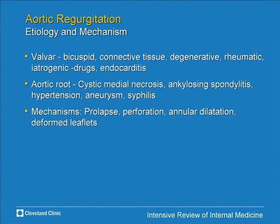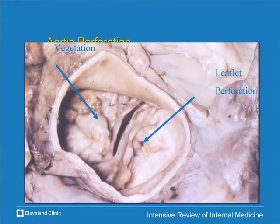In terms of etiology, it's easier to divide AR into valvular causes versus aortic root causes. Valvular: bicuspid valve, rheumatic disease, degenerative disease, or endocarditis causing leaflet changes. Aortic root: the root has enlarged so the leaflets can no longer cover the orifice — this occurs with aneurysms from any cause: Marfan syndrome, atherosclerosis, hypertension. Here's an example of endocarditis of a bicuspid valve with leaflet perforation and a vegetation.